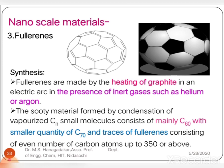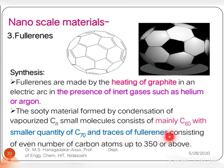The fullerene molecules look like a spherical soccer ball structure. Fullerenes are synthesized by heating graphite in an electric arc in the presence of inert gases like helium or argon. The sooty material formed by the condensation of graphite has the formula C_n molecules, where n stands for the number of carbon atoms present in the molecule. Majorly we are able to get C60, with a smaller quantity of C70, and traces of fullerenes consisting of even numbers of carbon atoms up to 350 or above.